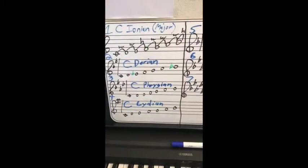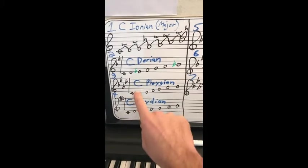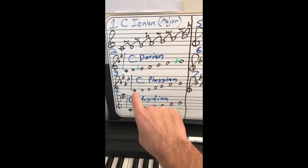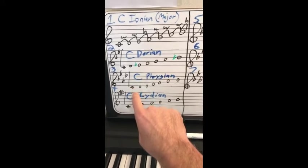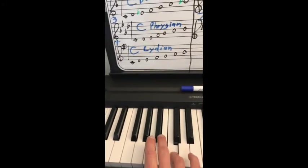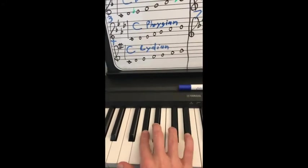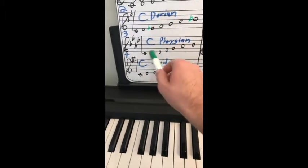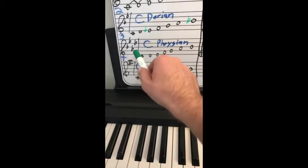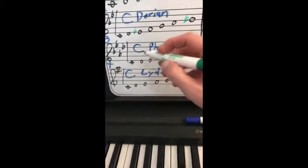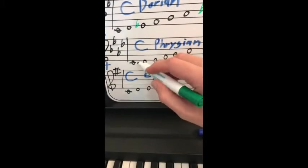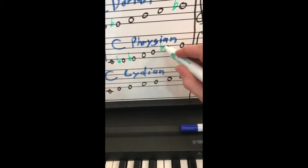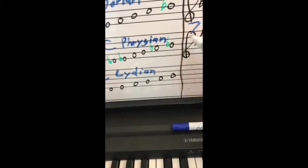Now, let's go over here. The next mode is Phrygian. C Phrygian. Phrygian is a third mode. In what scale is C the third note? We'll find C. What's a major third down? A flat. So, C is the third, or excuse me, C Phrygian is the third mode of A flat major. A flat major is a key of four flats. I'm going to write that in. We get a marker here. D flat, E flat, A flat, B flat.